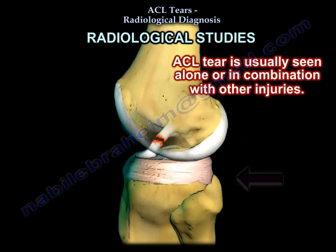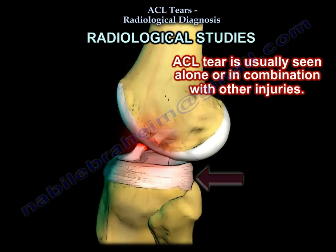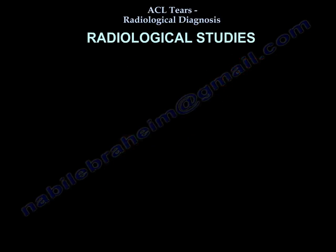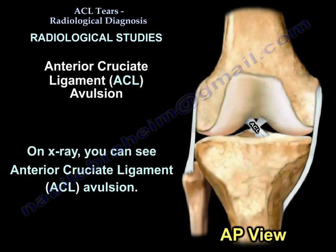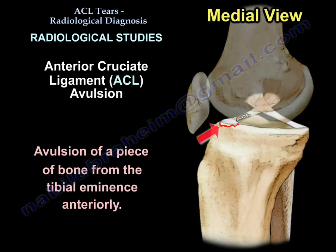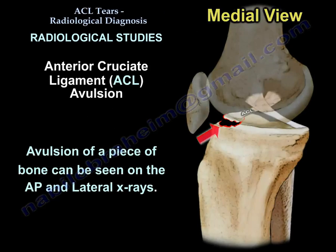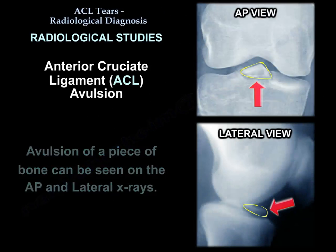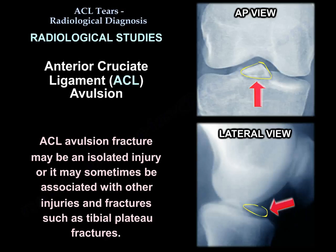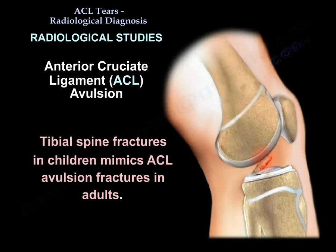Radiological studies: the ACL tear is usually seen alone or in combination with other injuries. On x-ray you can see anterior cruciate ligament avulsion — avulsion of a piece of bone from the tibial eminence anteriorly. The avulsion can be seen on the AP and lateral x-rays. The ACL avulsion fracture may be an isolated injury or it may be associated with other injuries, such as tibial plateau fractures. Tibial spine fractures in children mimic ACL avulsion fractures in adults.